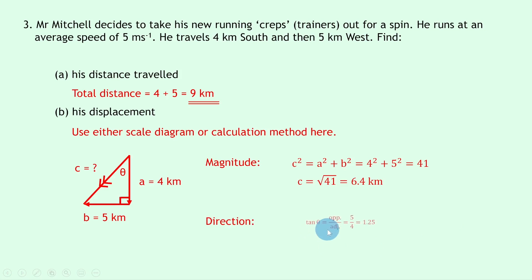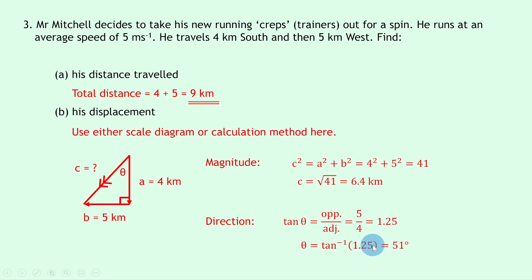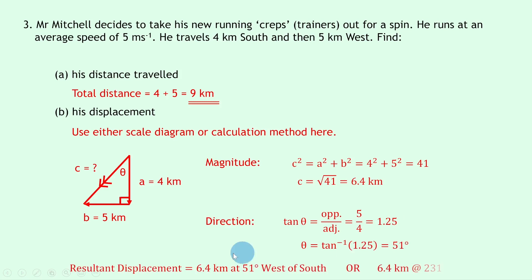To find the angle for the direction, we use tan theta equals opposite over adjacent. Opposite the angle is 5, adjacent is 4, so we have 5 divided by 4, which is 1.25. Taking inverse tan of 1.25 gives theta equals 51 degrees. We then write our final statement using compass points or bearings: the resultant displacement is 6.4 kilometers at 51 degrees west of south, because the resultant vector is 51 degrees towards west away from south.